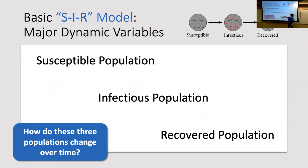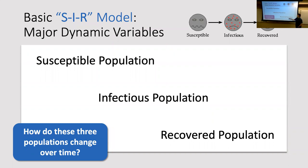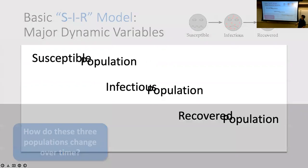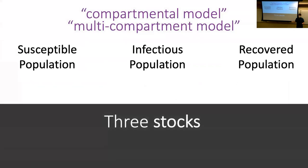In the so-called SIR model of disease spread, we model three separate groups — we partition a population into these three groups. One subset is the number of susceptible people who haven't had the disease. The others are infected people who are currently spreading the disease — the infectious population — and those who've recovered from the disease and aren't spreading it anymore. In this simple model, the recovered population is immune, these ones are spreading, and these ones are able to be spread to.